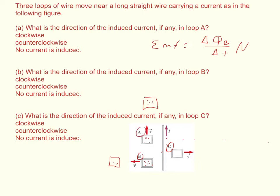Next for B and C, we'll use Lenz's Law. Lenz's Law says that the induced current will travel in the direction that opposes the change of the magnetic field.